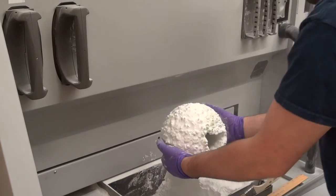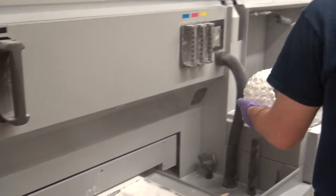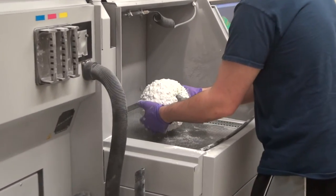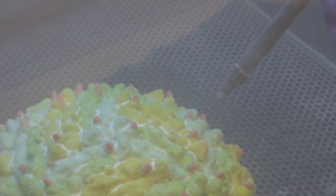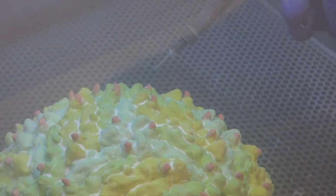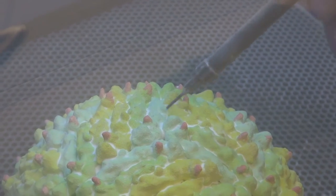After enough powder has been removed, the model is transferred to a depowdering station built into the printer. This station has a built-in nozzle that blows pressurized air, allowing for the cleaning of any residual powder.